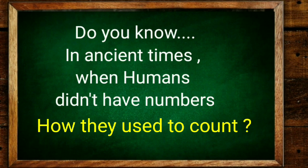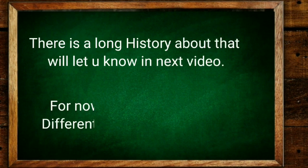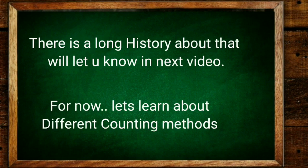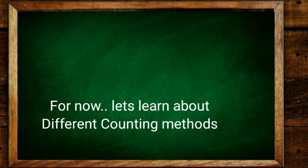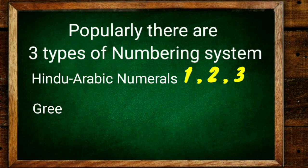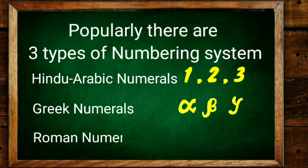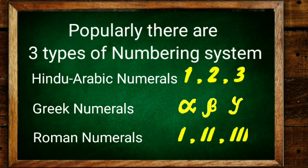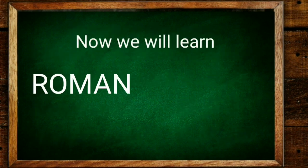Do you know in ancient time when humans didn't have numbers how they used to count? There is a long history about that. We'll let you know in the next video. For now, let's learn about different counting methods. Popularly there are three types of numbering systems: Hindu-Arabic numerals 1, 2, 3, Greek numerals alpha, beta, gamma, and Roman numerals I, II, III.